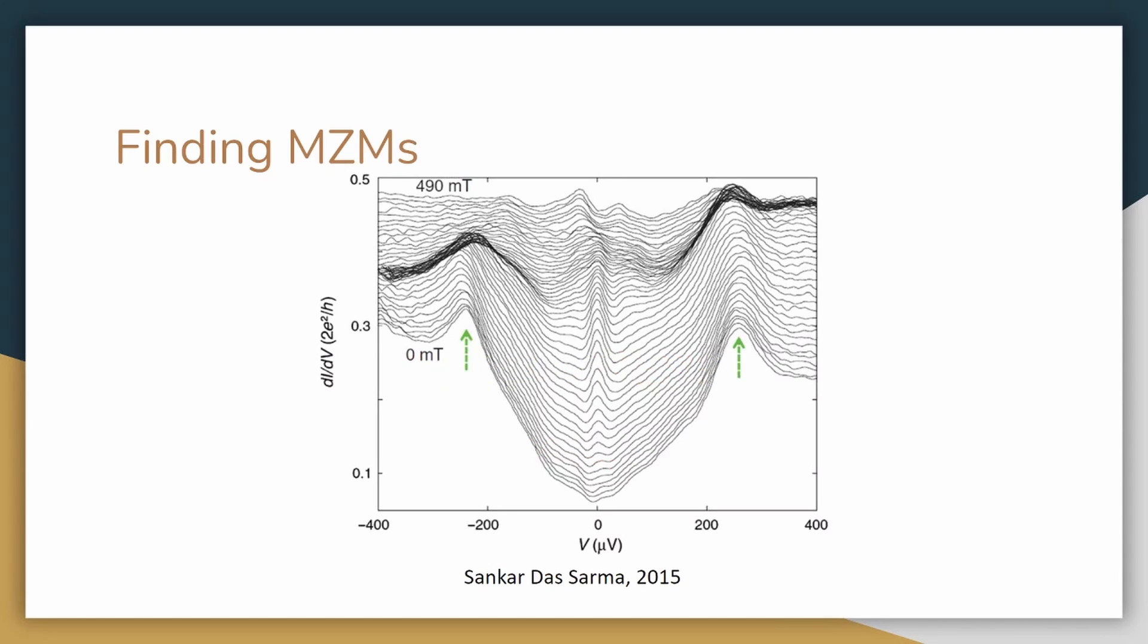The graph you see here is from 2015 from Professor Sankar Das Sarma proving that finding these particles are at least possible. Since then, we have improved experimental techniques to try and firmly prove that the particle exists.